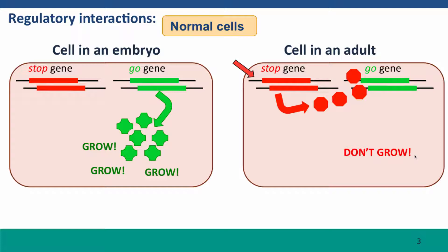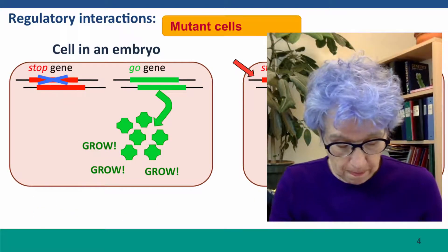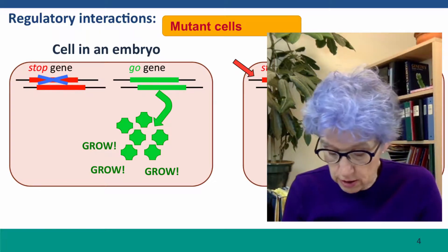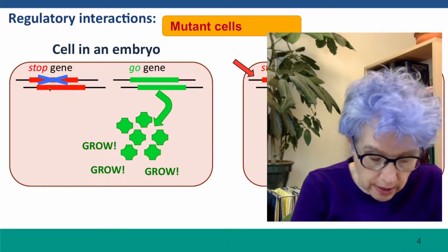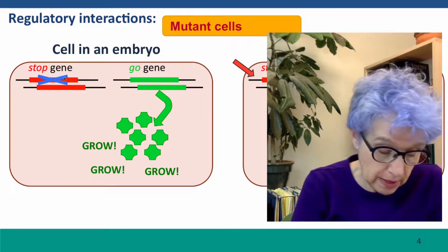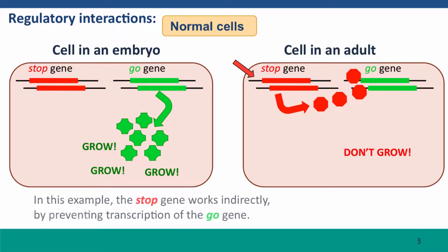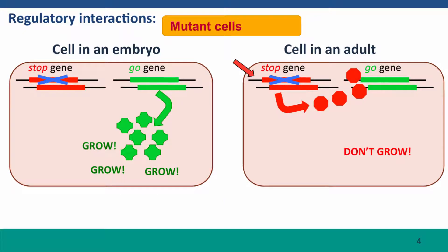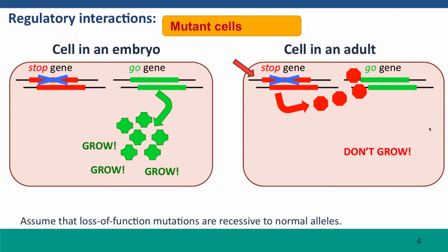Now let's think about mutant cells. Consider a single knockout mutation in one allele of the stop gene. In the embryo, it doesn't really matter what the state of the stop gene is, because the stop gene is normally off in embryonic cells anyway — so it has no effect on phenotype. In the adult, there's still one functioning copy of the stop gene, and that's probably enough to turn the go gene off so the cell doesn't grow. We don't really expect any phenotypic effects from a single mutant allele.